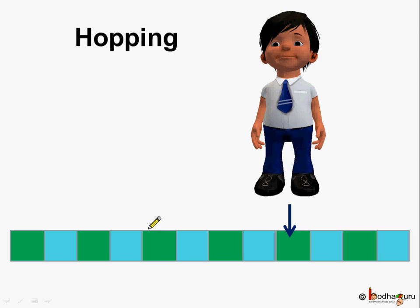Next Aman continued to hop till this square. Let's count it. 1, 2, 3, 4, 5, 6, 7, 8, 9. Aman hopped till square number 9.